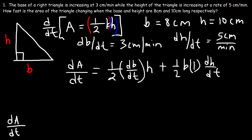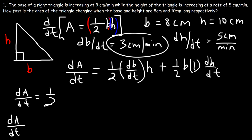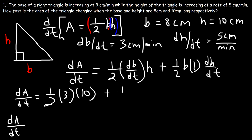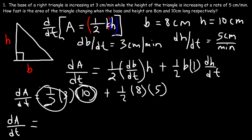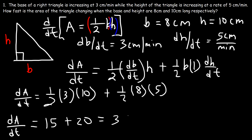So now we have everything we need to calculate dA/dt. db/dt is 3 centimeters per minute, h is 10, b is 8, and dh/dt is 5. So one-half times 10 times 3 is 15, and one-half times 8 times 5 is 20. Then 15 plus 20 is 35.